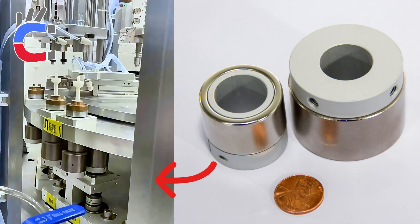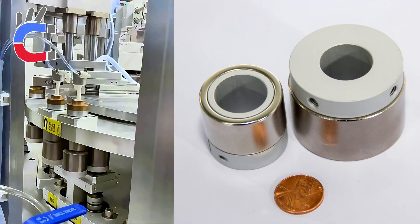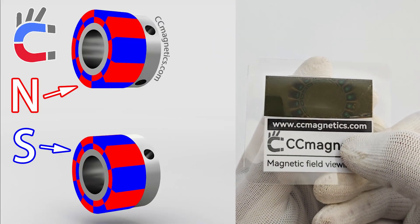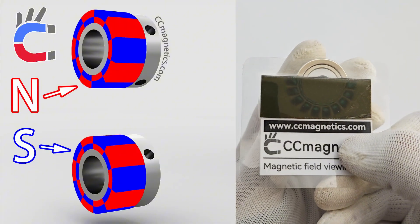Its magnetic poles are perpendicular to the base, allowing two gears to naturally align in parallel when placed together.